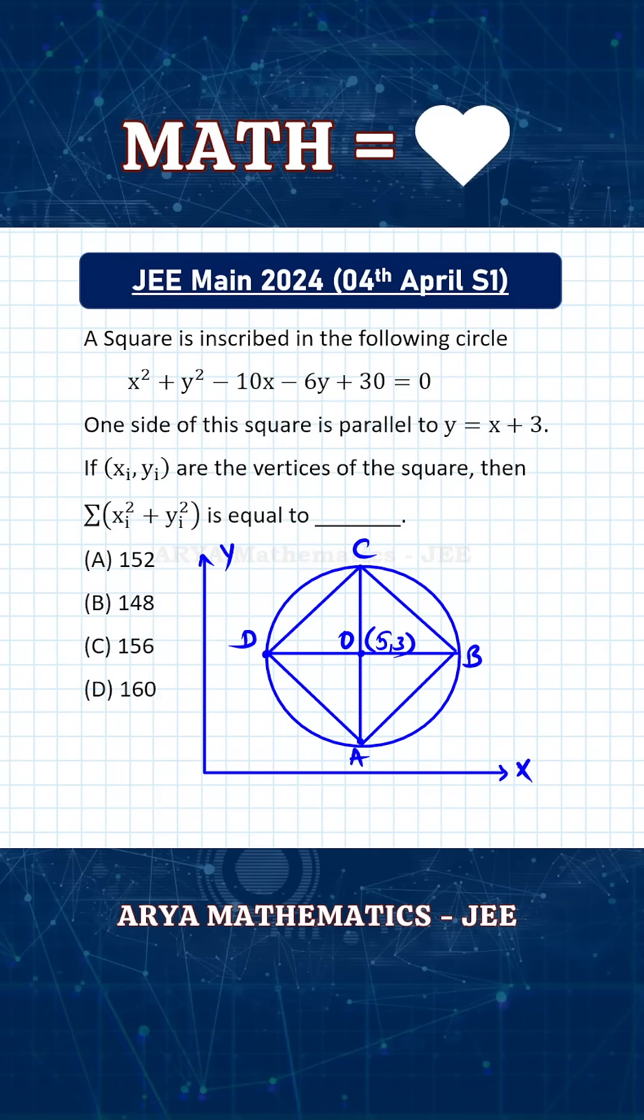One simple observation and you can solve this JEE Main problem in less than 20 seconds. A square is inscribed in the following circle, and one side of the square is parallel to the line y = x + k.